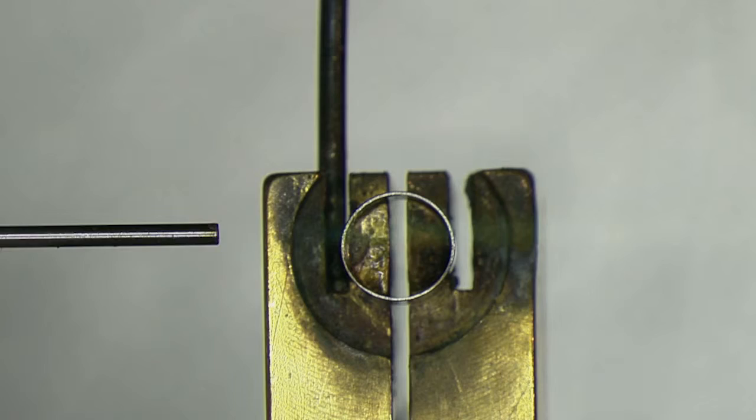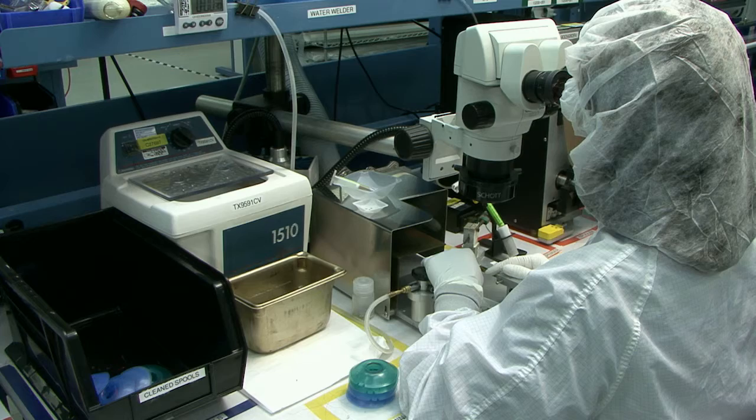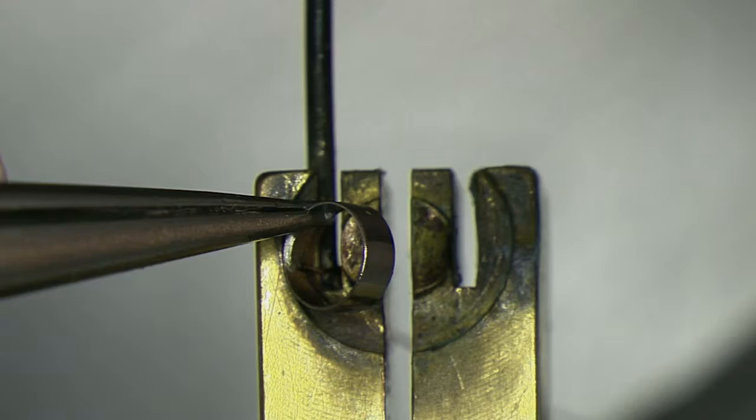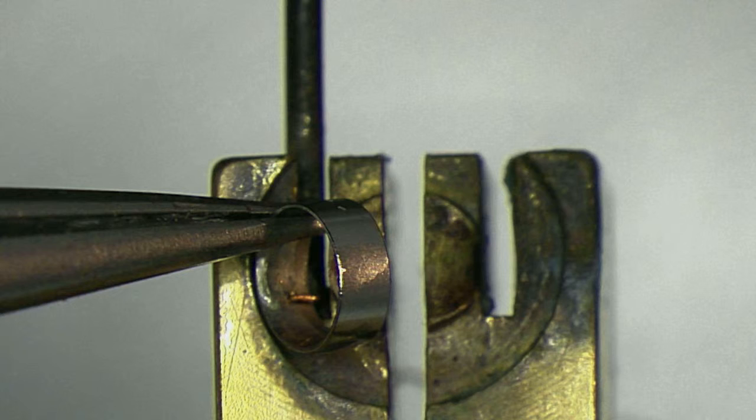Remember, you can reapply the torch to fully melt the paste. However, do not add more paste. We are aiming for just the right amount of heat to fully melt the paste and create a smooth, shiny joint. The paste will fill the area between the ring and wire.